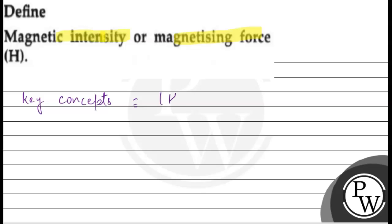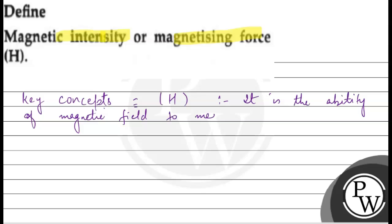Magnetic intensity, denoted H, is the ability of a magnetic field to magnetize a material medium. This ability of the magnetic field to magnetize a material is called magnetizing force.